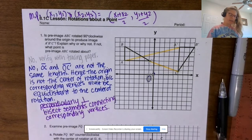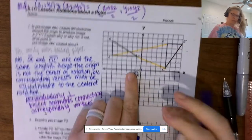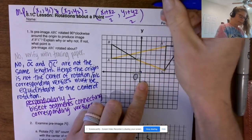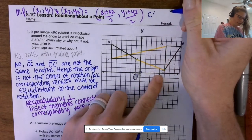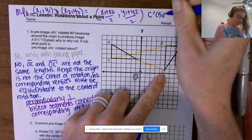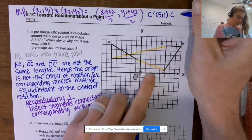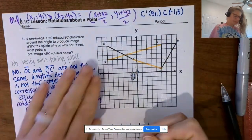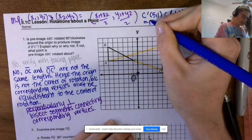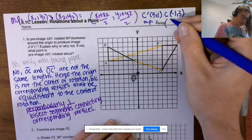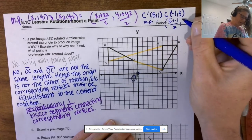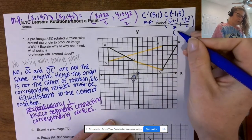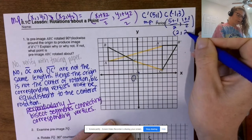We need to find the midpoint between C and C′. C′ has coordinates (5, 1) and C is (−1, 3). The midpoint is ((5 + (−1))/2, (1 + 3)/2) = (4/2, 4/2) = (2, 2). Excellent.